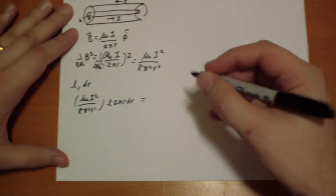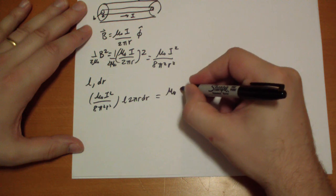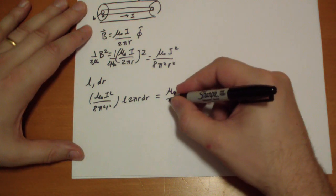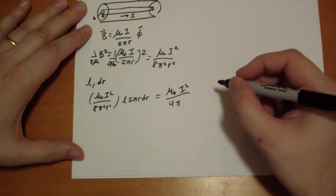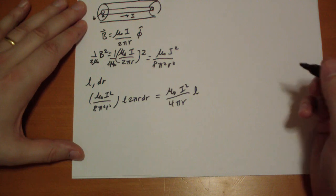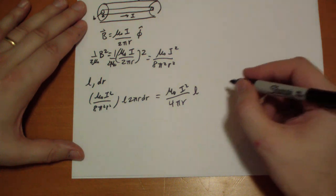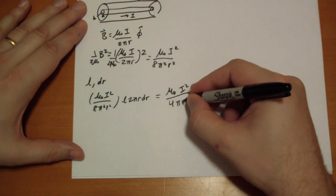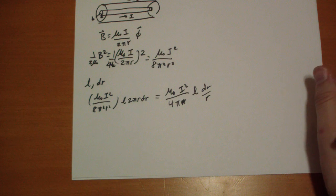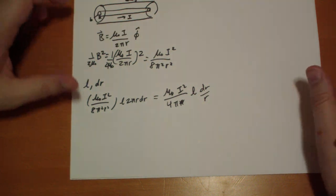And simplifying that, we get a mu naught on top, i squared on top. So we're going to have 4 pi left over at the bottom. The r's cancel leaving one at the bottom. And then we have an L. And we have a dr. Let's move this r over here. So let's integrate. So that's the integrating from A to B.